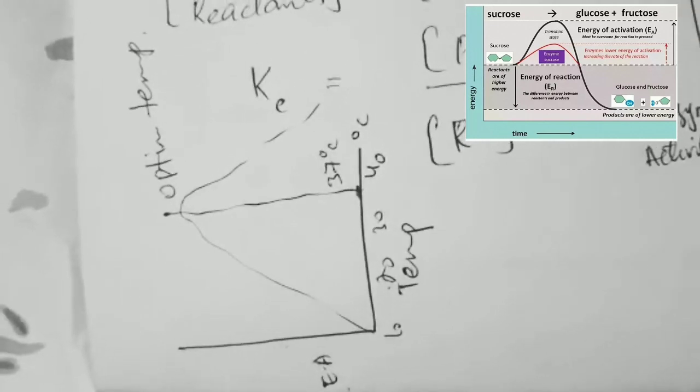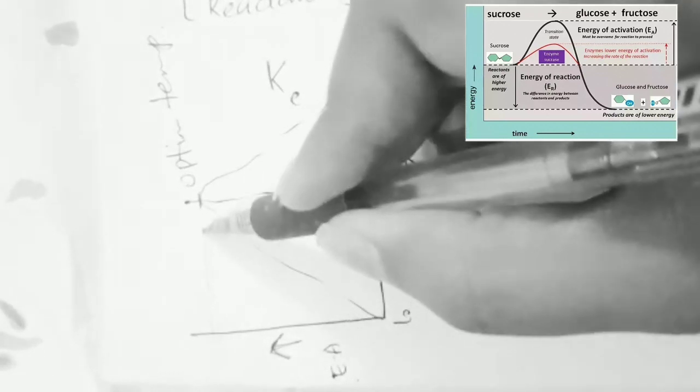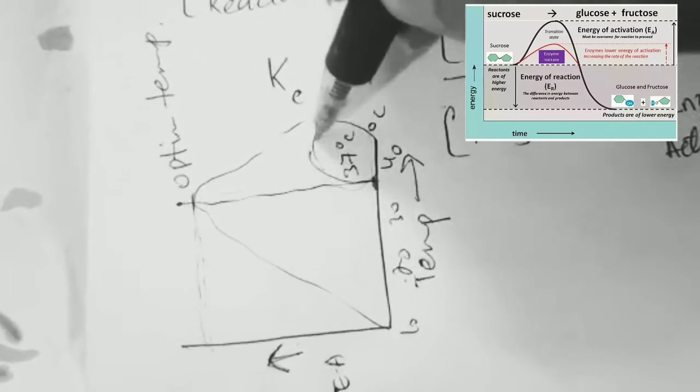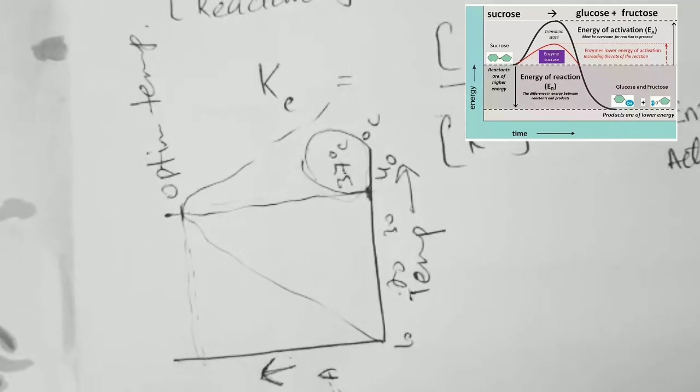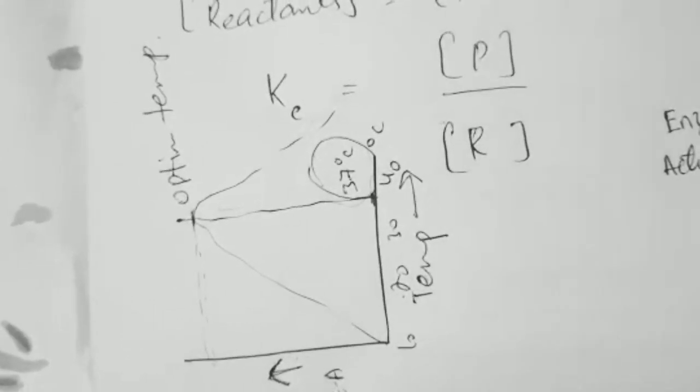Similarly, enzymes show maximum activity at a temperature called the optimum temperature. As temperature increases, the rate of the enzyme-catalyzed reaction also increases up to a certain limit. For the human body, 37°C is the optimum temperature for certain enzymes. Beyond that, if temperature is increased further, the enzyme is denatured because enzymes are made up of proteins, which degrade at high temperatures.